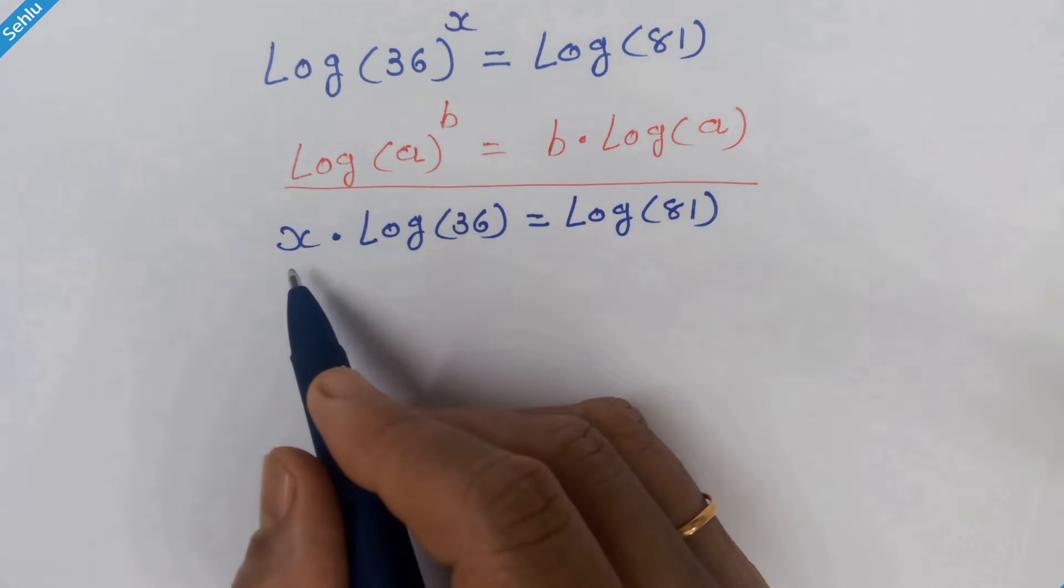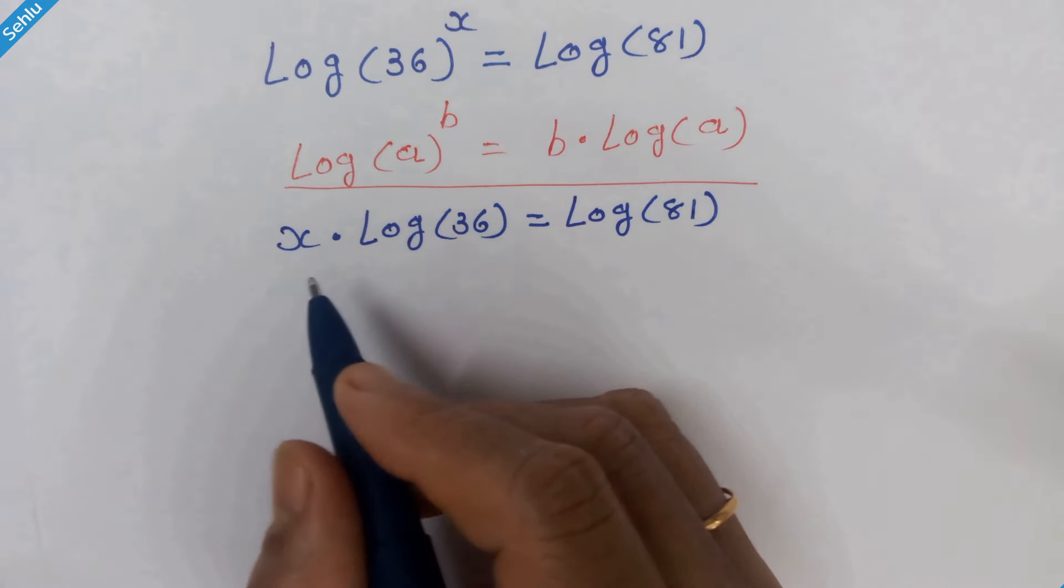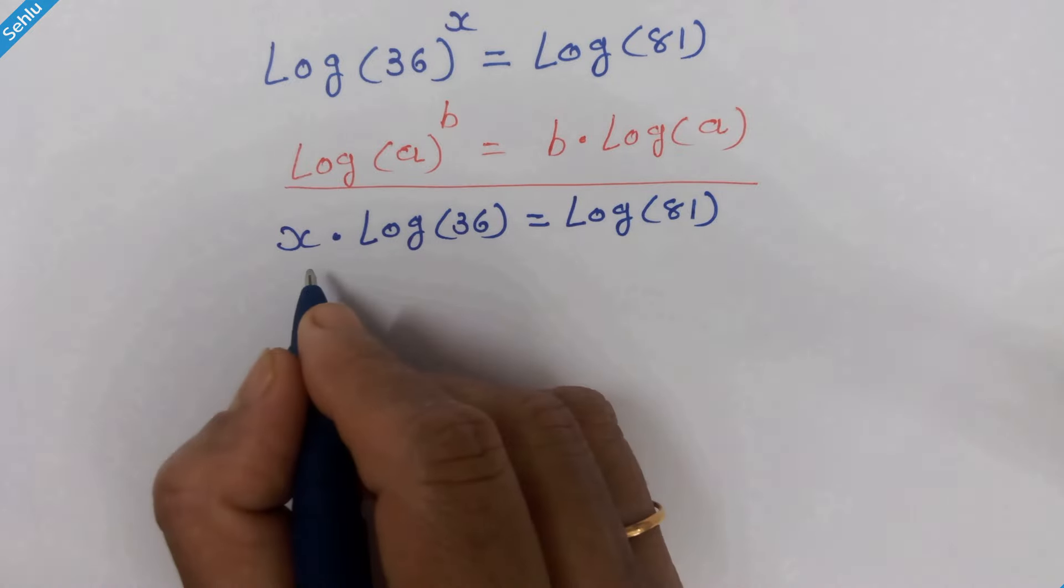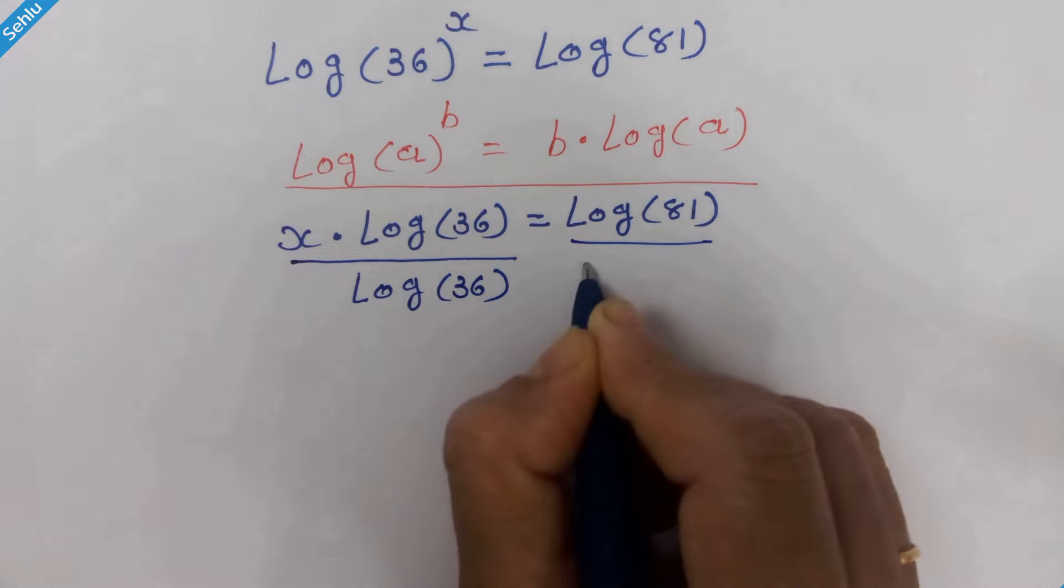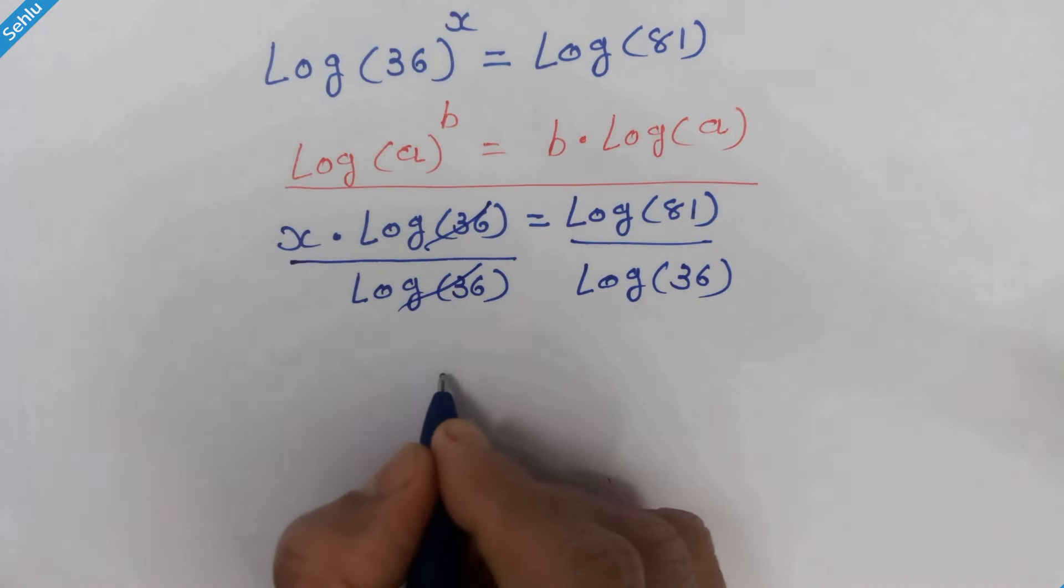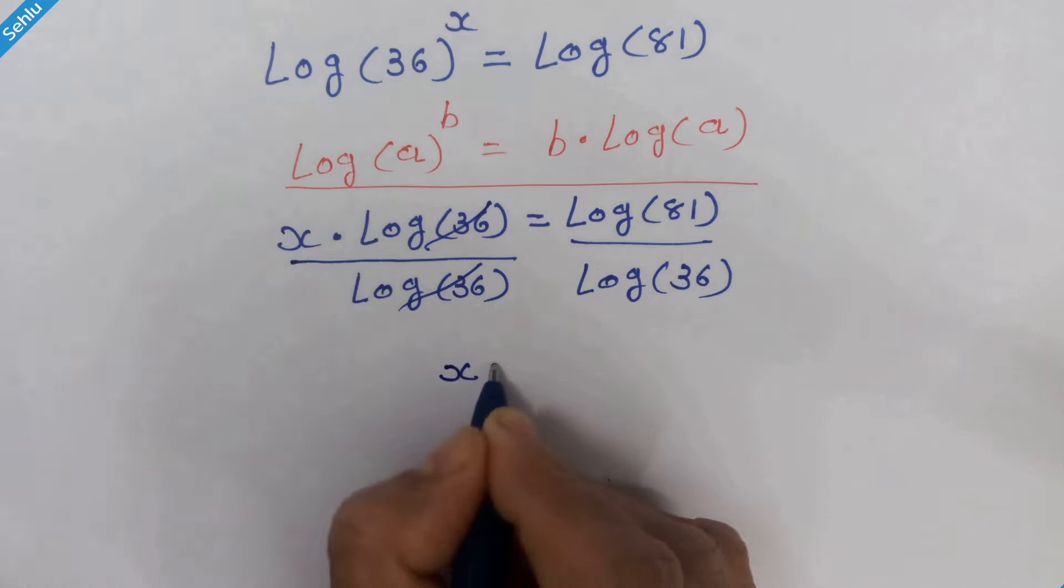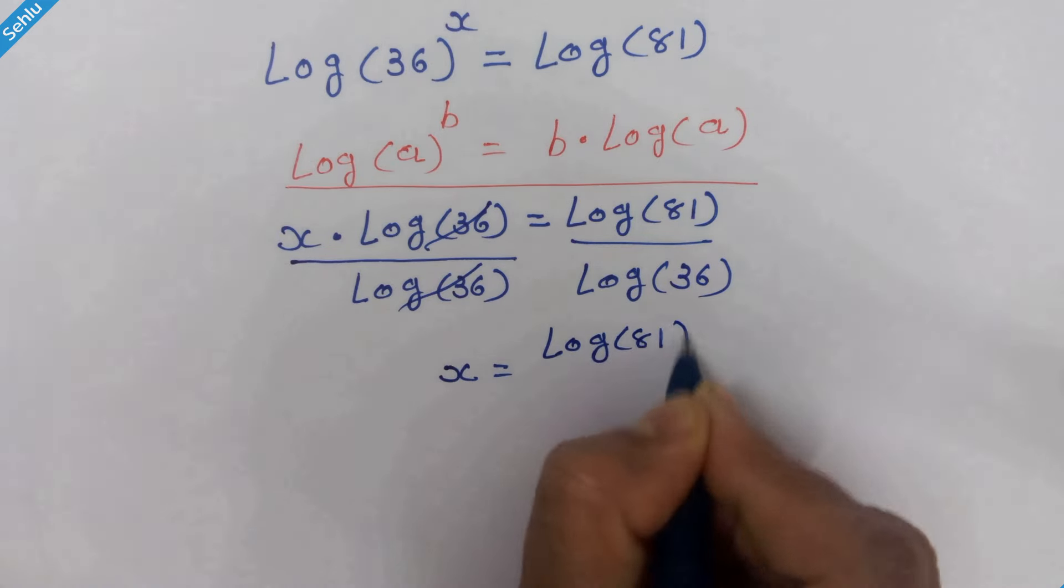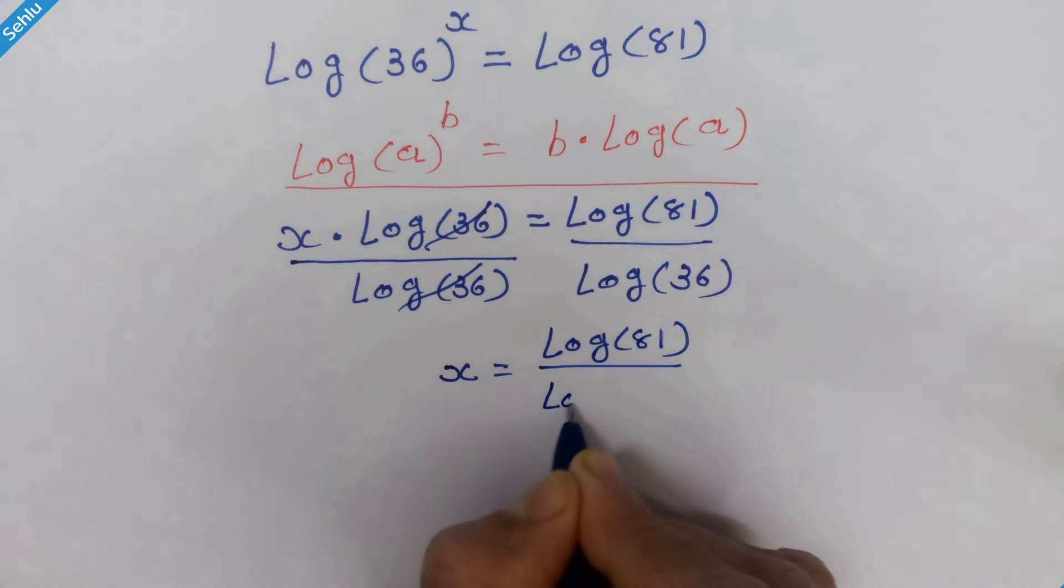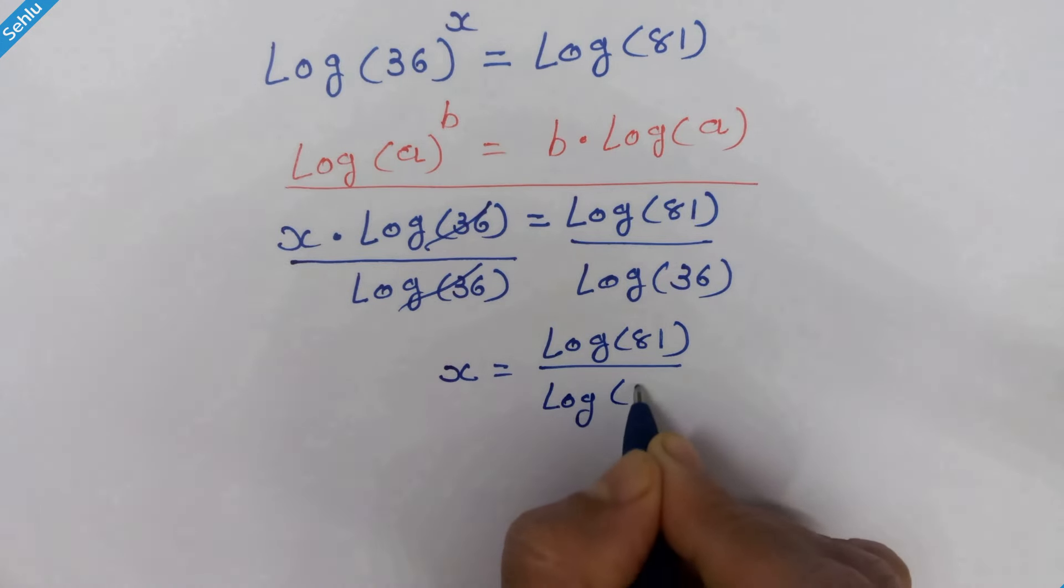Now let's isolate x on one side. We divide both sides by log of 36. These two will be eliminated. Now we have x equals log of 81 upon log of 36.